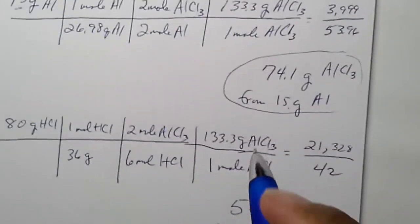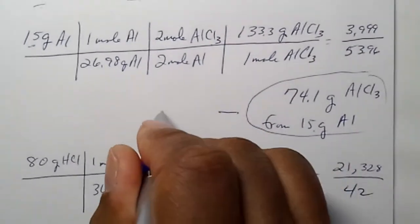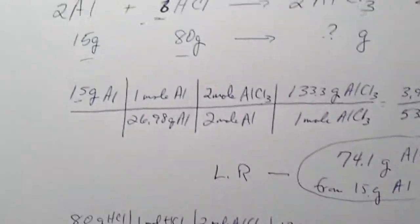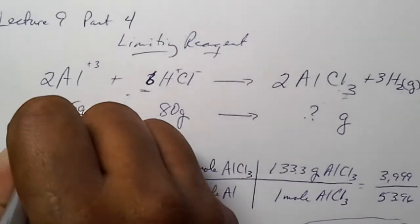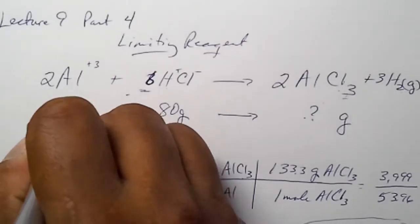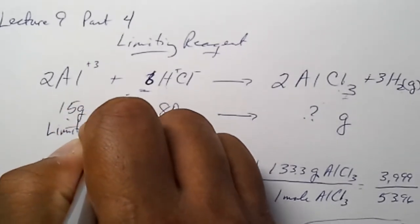So, our limiting reagent, and we go back to our balanced equation, aluminum is our limiting reagent.